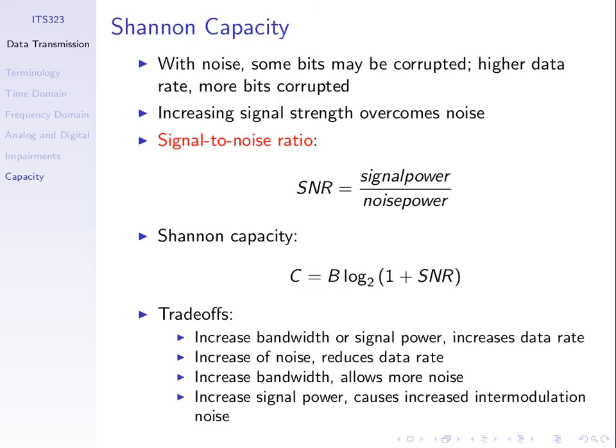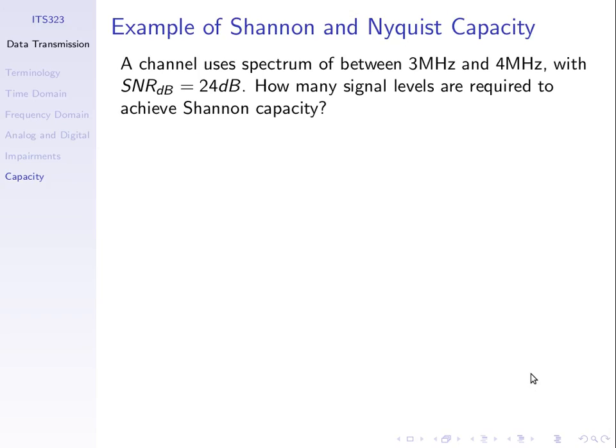Any questions on Nyquist capacity or Shannon capacity? In the lecture notes, the next slide shows the same example we just went through, except the SNR is expressed as 24 dB (decibels) rather than 251. We haven't explained decibels yet — we'll do that now.